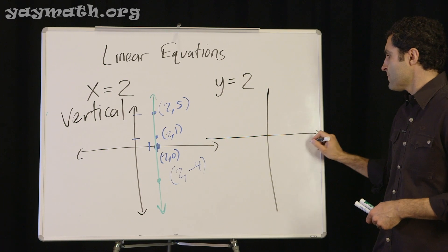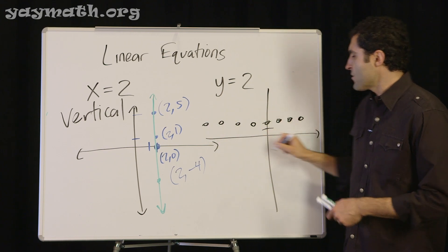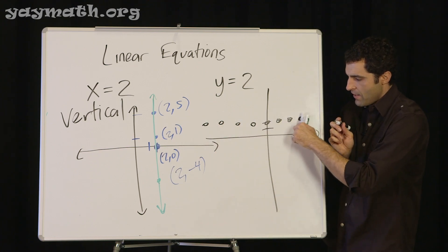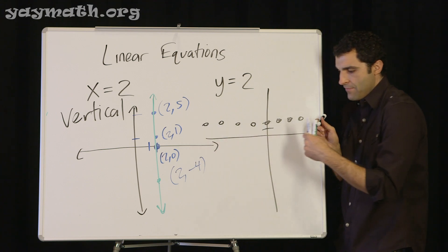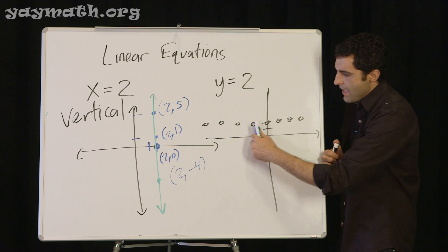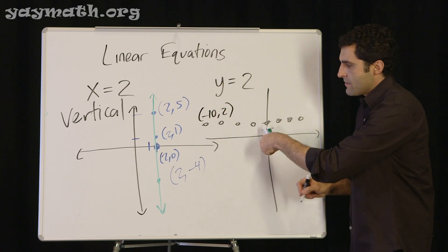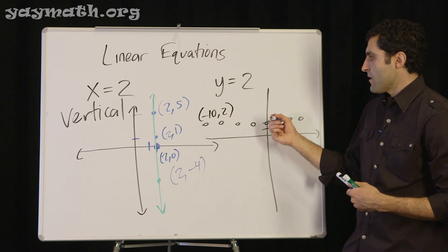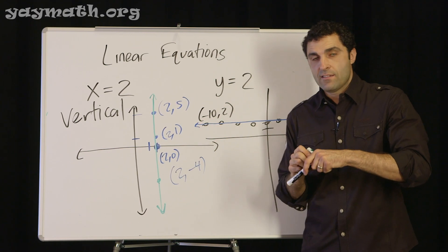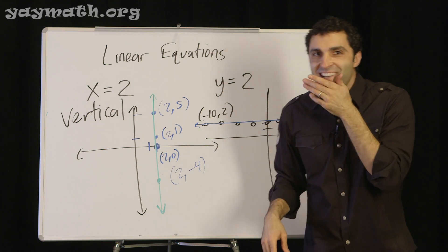So what would y equals 2 look like? By the same concept: y is 2 here, y is 2 here, y is 2 here — all across the graph. Meanwhile, x is constantly changing, getting large to the right and small to the left. The consistent thing is y equals 2, giving us a horizontal line. Thanks for watching — YayMath!